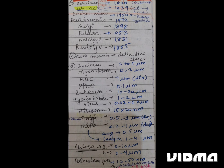Now some important dimensions and sizes given in the chapter are: Bacteria 3-5 micrometer, Mycoplasma 0.3 micrometer.